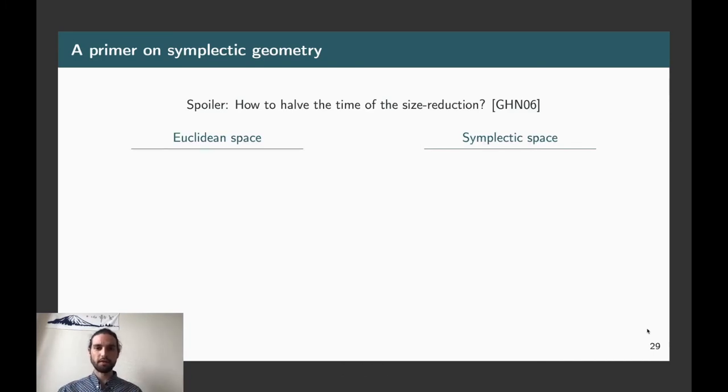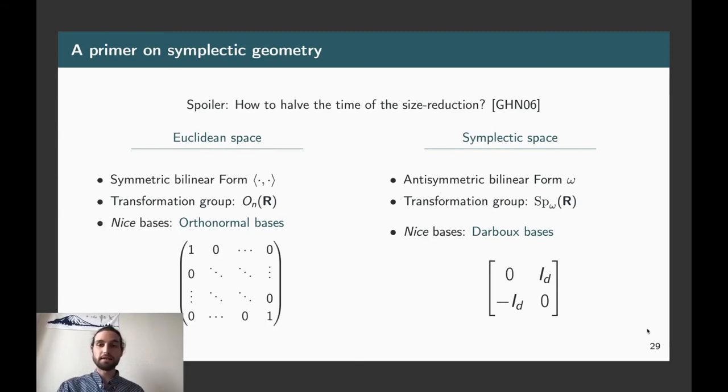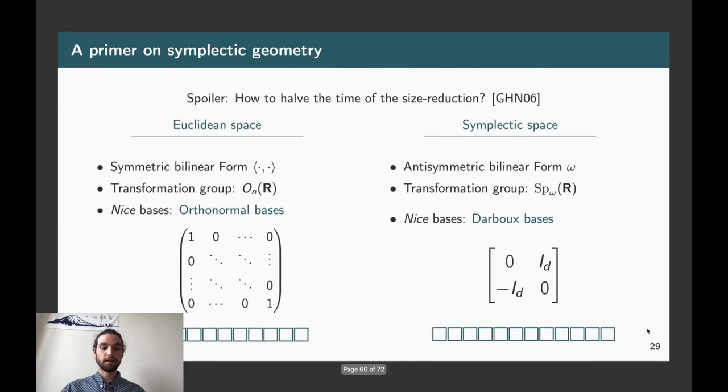So, to construct an Euclidean space, you take a real vector space and you endow it with a symmetric bilinear form. On the other hand, for a symplectic space, you endow it with an anti-symmetric bilinear form, let's say omega. And the subgroup of linear transformations that will preserve the symmetric bilinear form in the case of the Euclidean space is called the orthogonal group. Whereas the same group, the transformation groups that will preserve the symplectic form, will be called the symplectic group associated to the form. And we have a notion of nice and canonical basis for both of these spaces. For Euclidean spaces, it corresponds to orthonormal basis, which are basically the basis for which the inner product has matrix, the identity matrix. And for symplectic spaces, the form omega has as matrix minus identity identity in reverse diagonal. And this is called a Darboux basis.